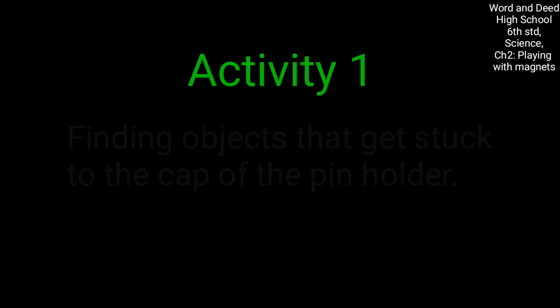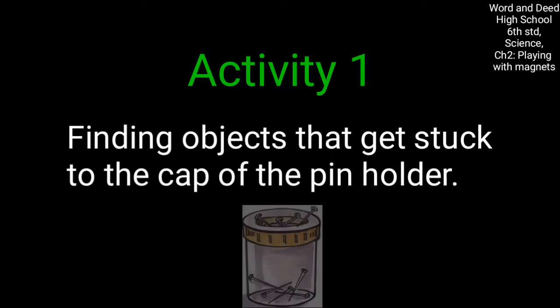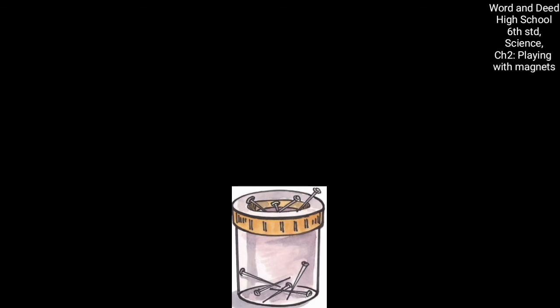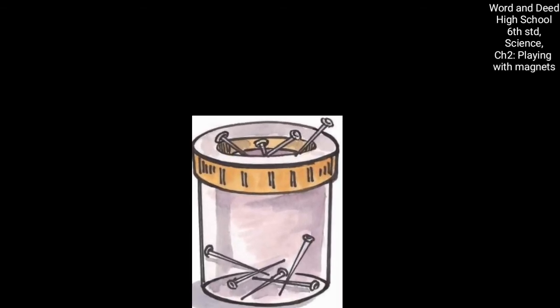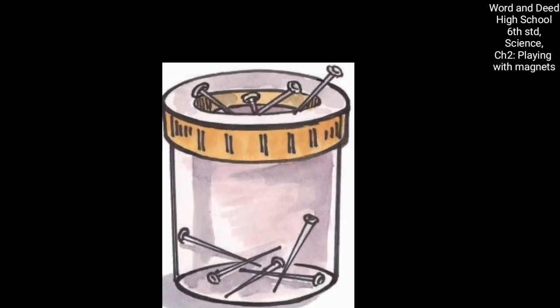Now to understand more about these magnets, we can do some activities. Activity one, finding objects that get stuck to the cap of the pin holder. Okay? Here you have to do that activity on your own. How you have to do is take a pin holder. You can get it from any stationary shop. Okay?